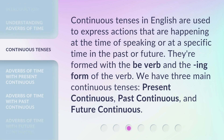Continuous tenses in English are used to express actions that are happening at the time of speaking, or at a specific time in the past or future. They're formed with the be verb and the -ing form of the verb. We have three main continuous tenses: present continuous, past continuous, and future continuous.